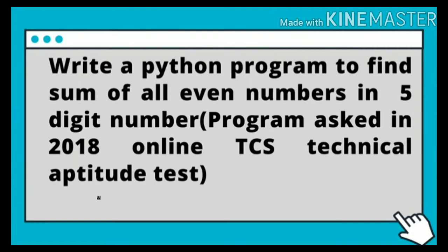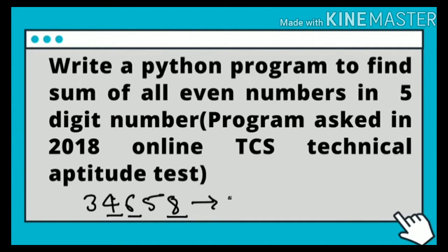To understand the aim of this particular program, first of all we'll need to consider a five digit number. Suppose this is my five digit number — then I want to calculate the sum of all even digits. If we consider this example, then 4, 6 and 8 are the even numbers. So I will identify all the even numbers, calculate their sum — that is 4 plus 6 plus 8 — and return the result, that is 18.